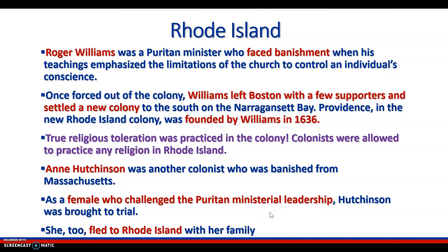Rhode Island. Roger Williams was a Puritan minister who faced banishment when his teachings emphasized the limitations of the church to control an individual's conscience. Once forced out of the colony, Williams left Boston with a few supporters and settled a new colony to the south of the bay. Providence and the new Rhode Island colony was founded by Williams in 1636. True religious toleration was practiced in the colony — colonists were allowed to practice any religion in Rhode Island.